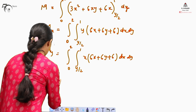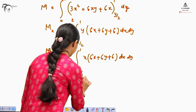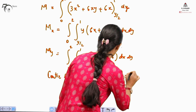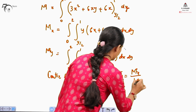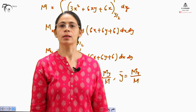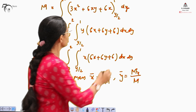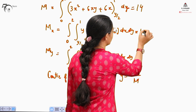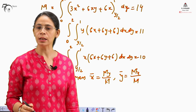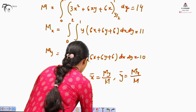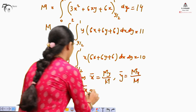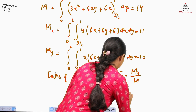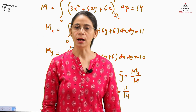The center of mass can be written as: x̄ = My/M and ȳ = Mx/M. The values of x̄ and ȳ give us the center of mass. I have calculated these values. M comes out to be 14, My comes out to be 11, and Mx comes out to be 10, because they are definite integrals giving us definite values. Substituting these values: x̄ = 10/14 and ȳ = 11/14. This is the center of mass for the thin plate.